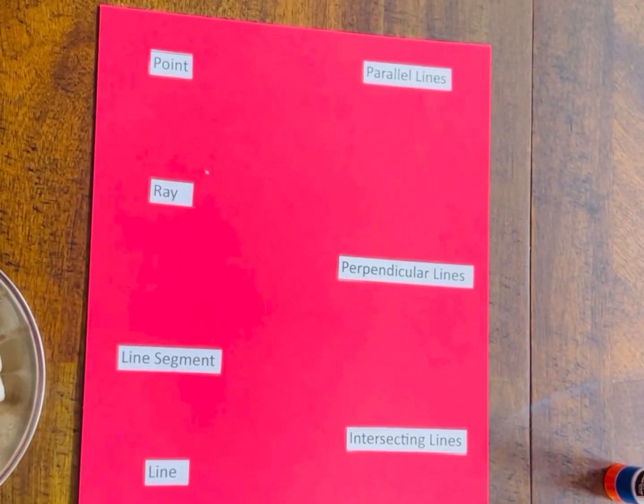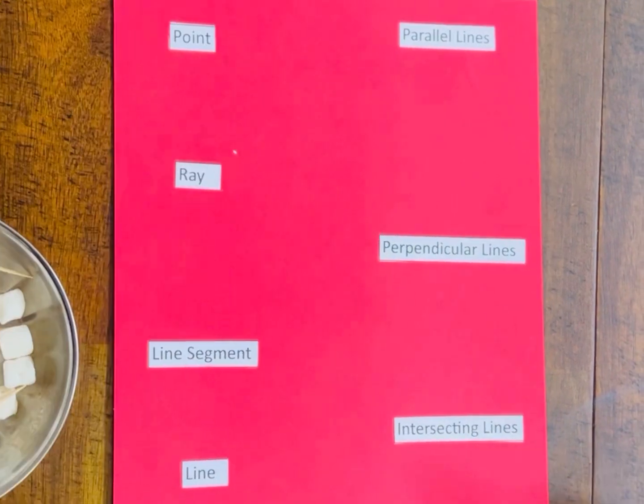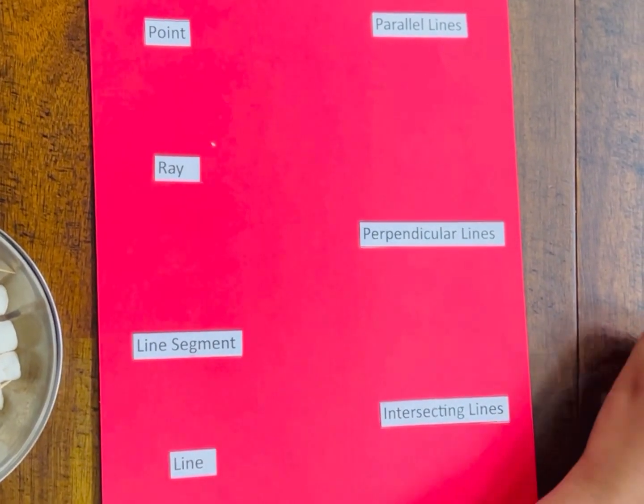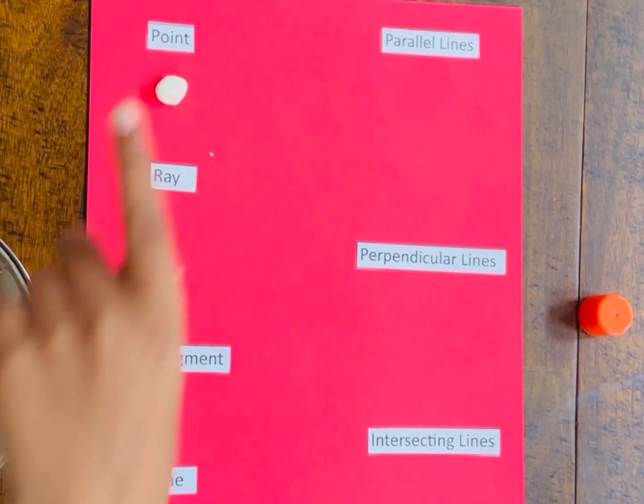Here is my sheet, and let's create a point. So for a point, we're going to put a marshmallow. A point has one exact location. It is like a dot. So we taped our marshmallow.